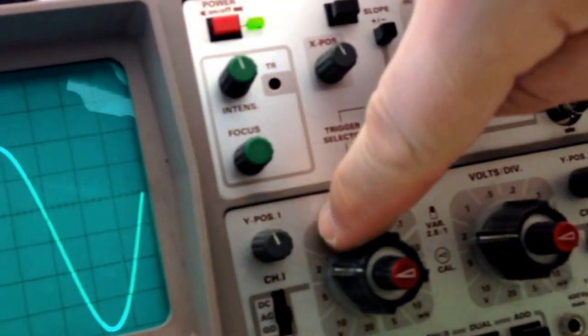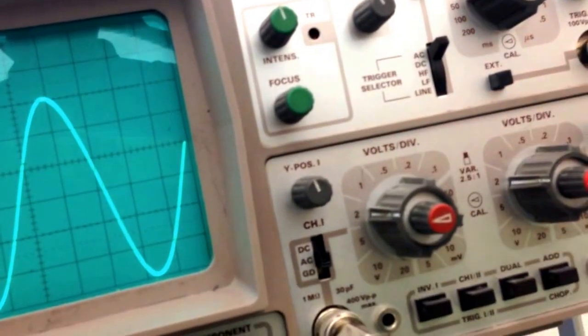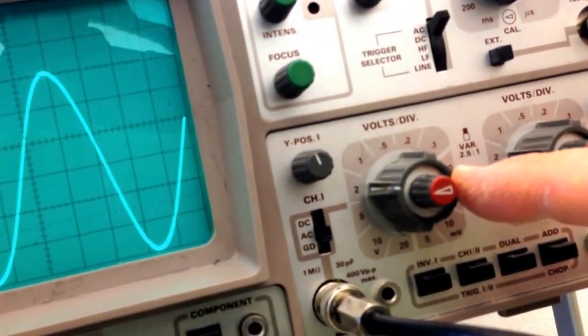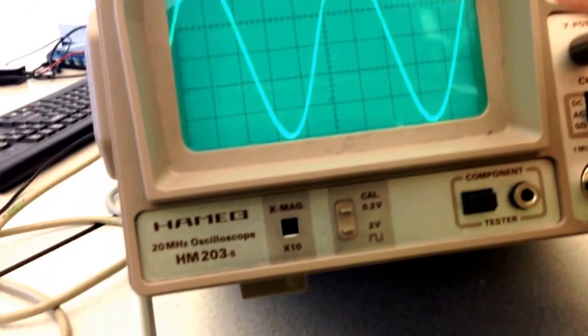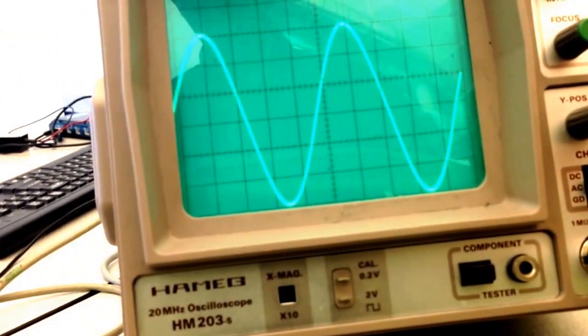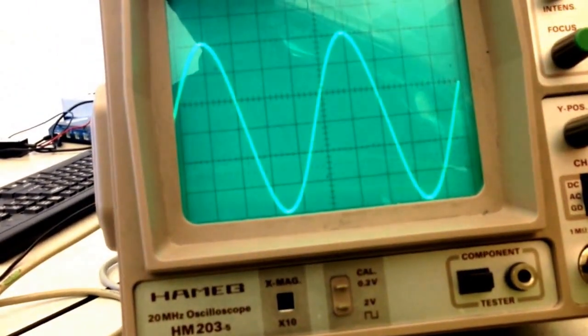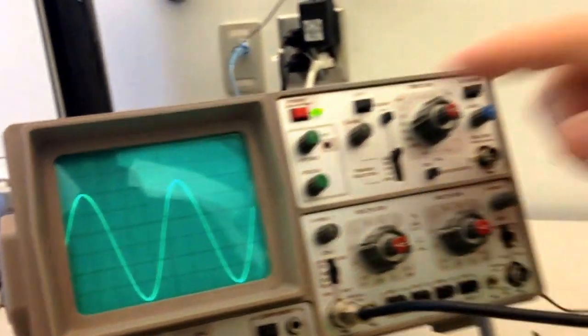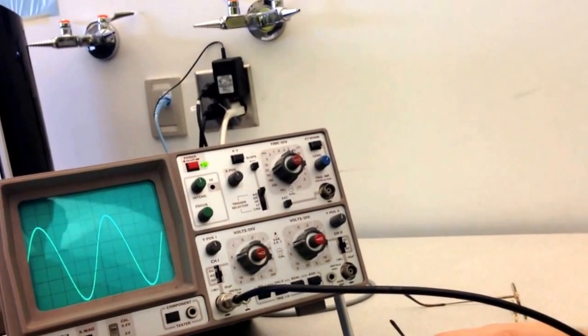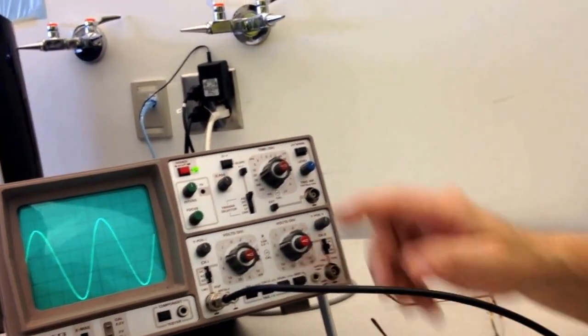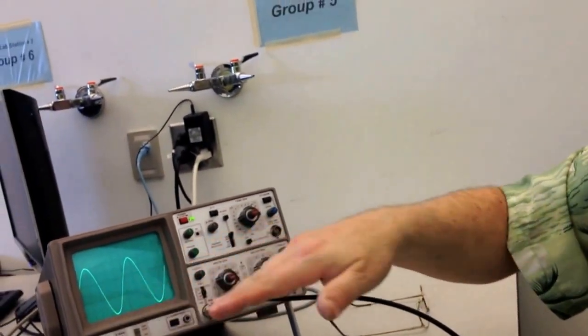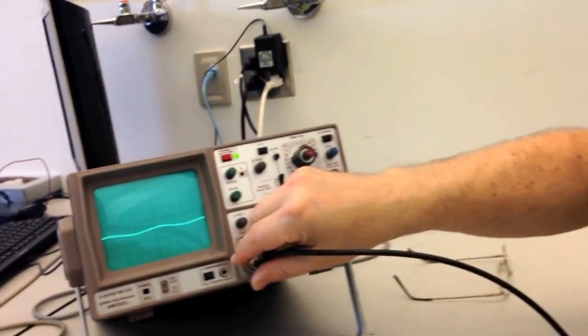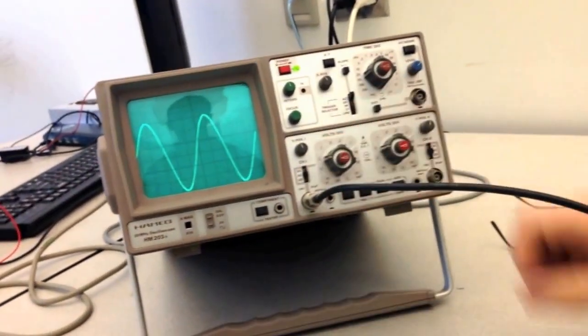Now, our magnification knob is set to two volts per division. So, if the magnification is two volts per division, and on the screen, the peak to peak voltage is six divisions. Six divisions times two volts per division. Divisions will cancel out. And our peak to peak voltage will be 12 volts. Now, what is our amplitude? Amplitude, by definition, is half the peak to peak voltage. So, our voltage or our amplitude will actually be six volts.